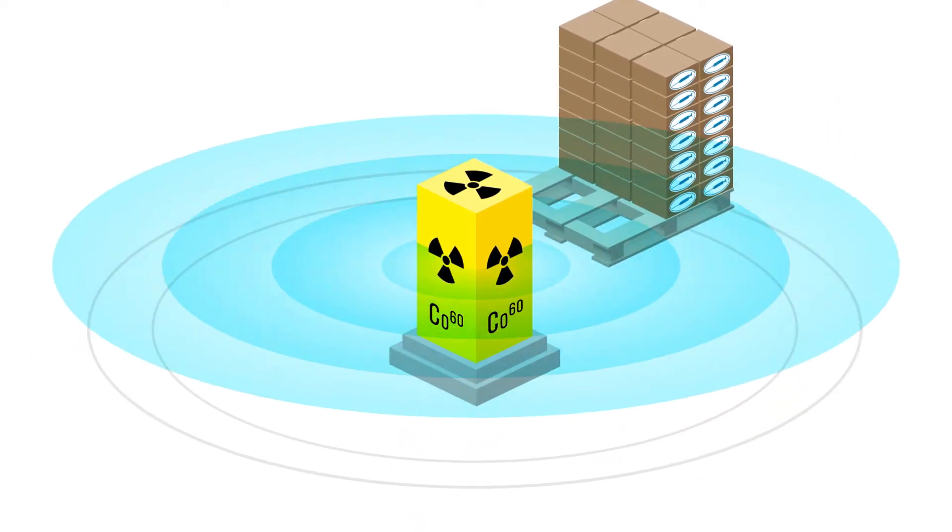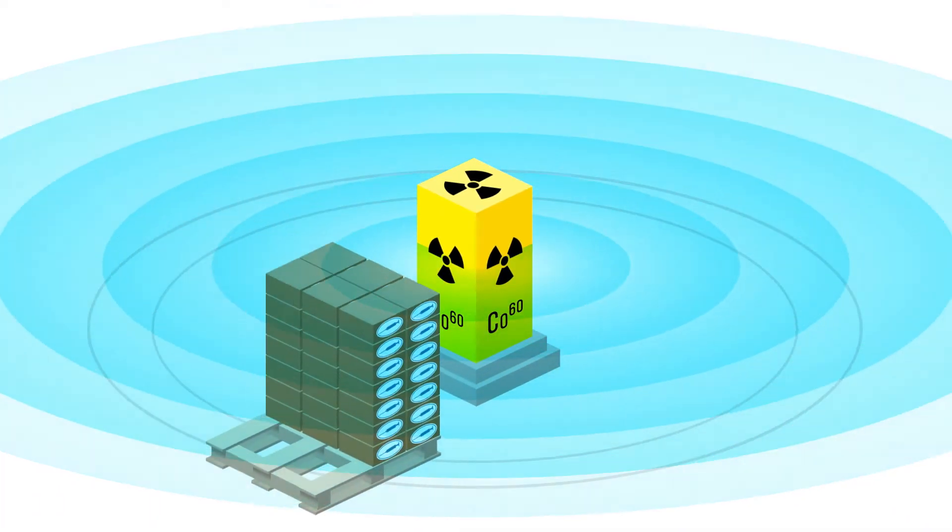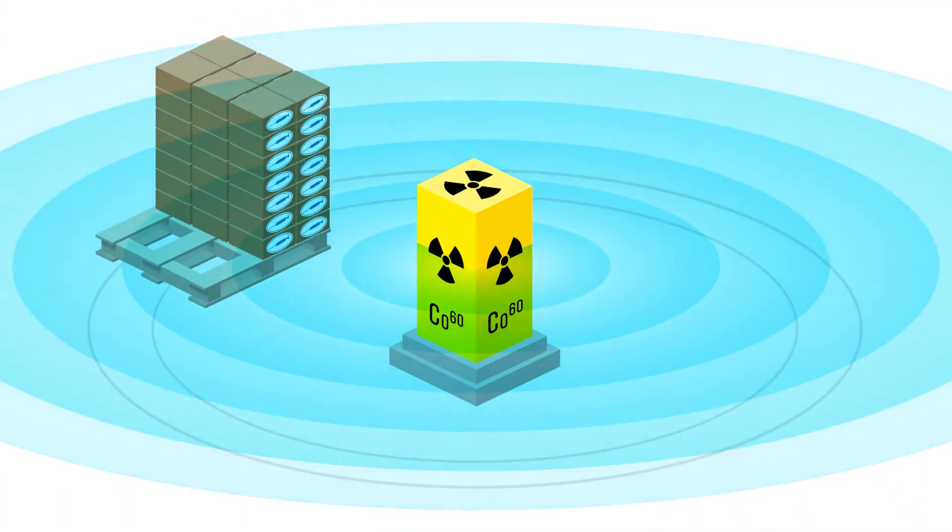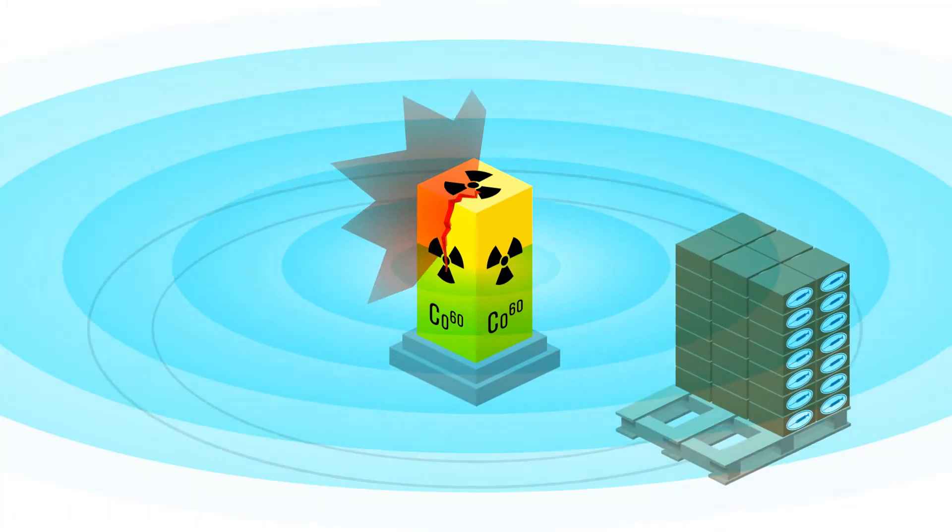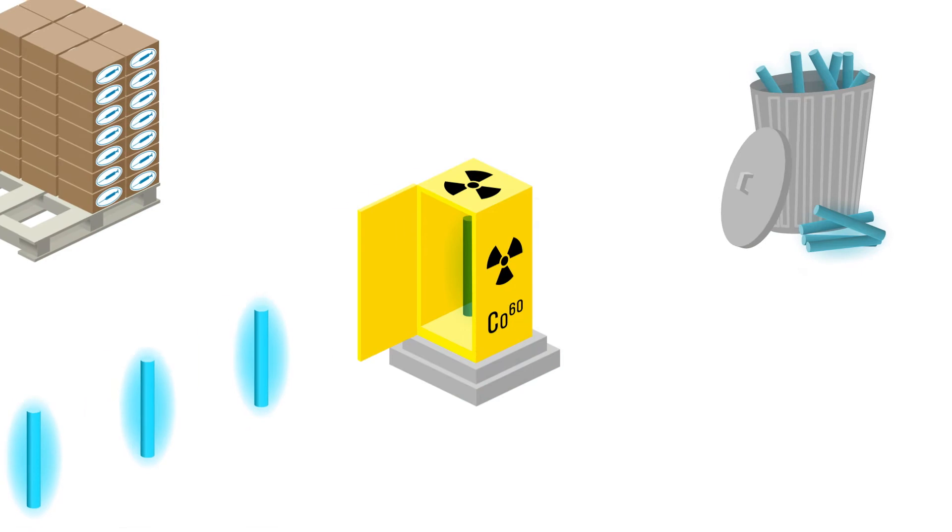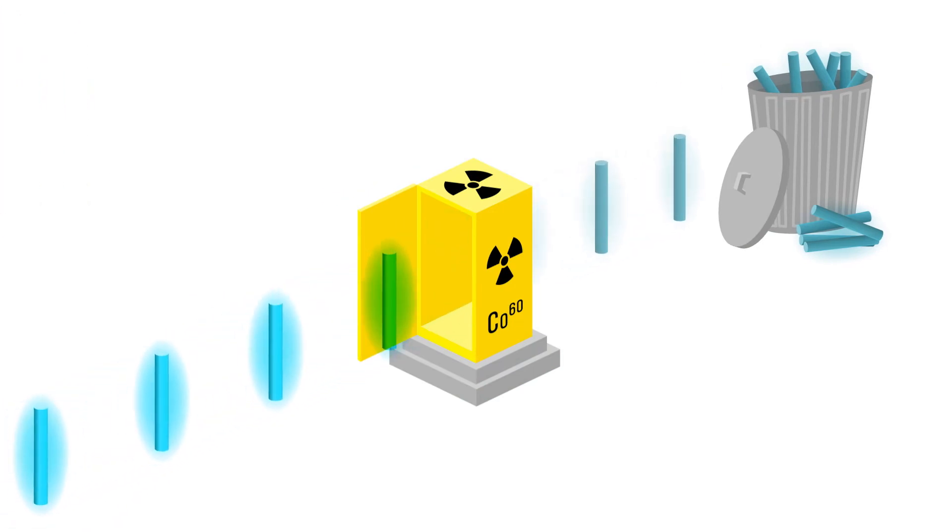Gamma is a radioactive process based on cobalt-60 sources, which continuously emit radioactivity. There's no way to stop it, even during an emergency. Also, gamma facilities reload new cobalt and dispose of old cobalt sources on a regular basis.